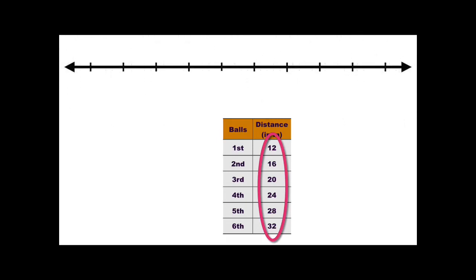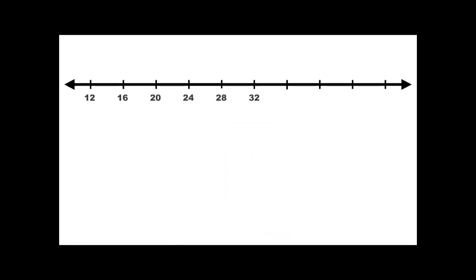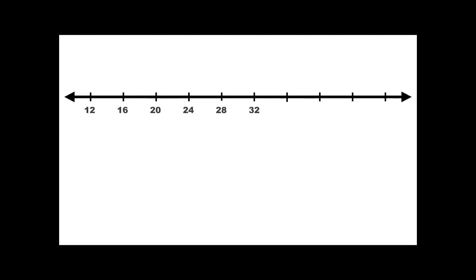Let us represent these numbers on a number line. The interesting thing about this set of numbers is that the difference between any two consecutive numbers is a fixed number — that is 4.